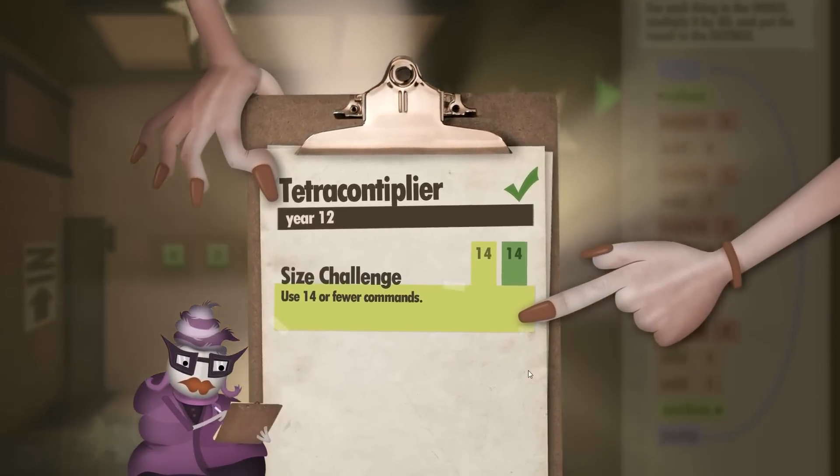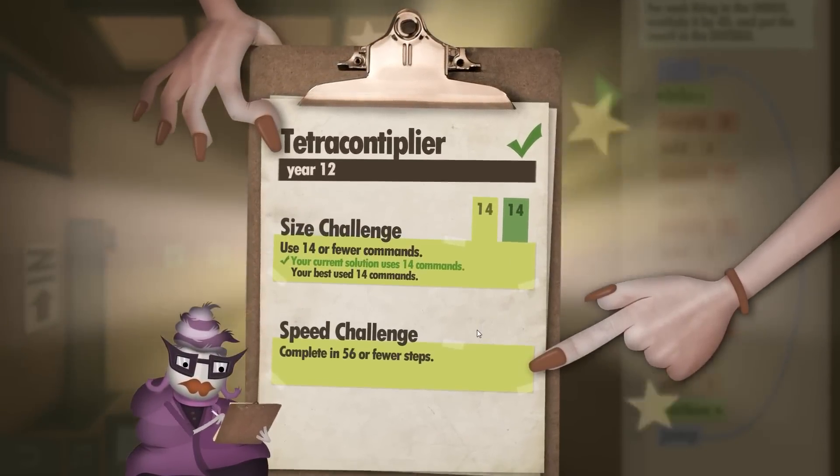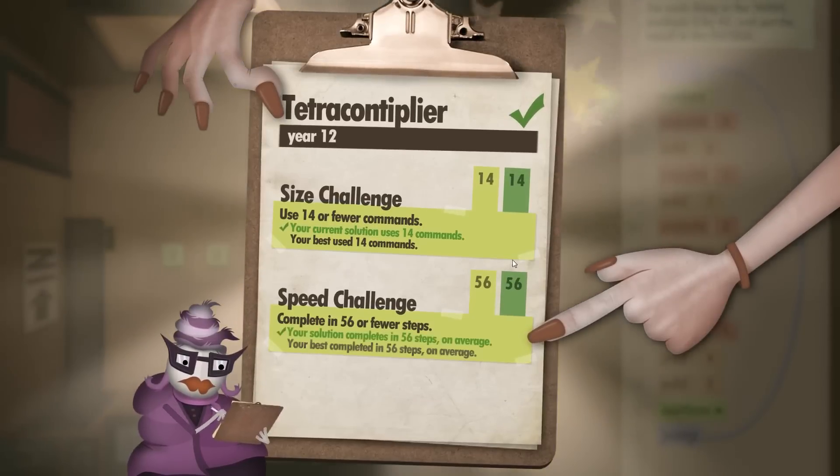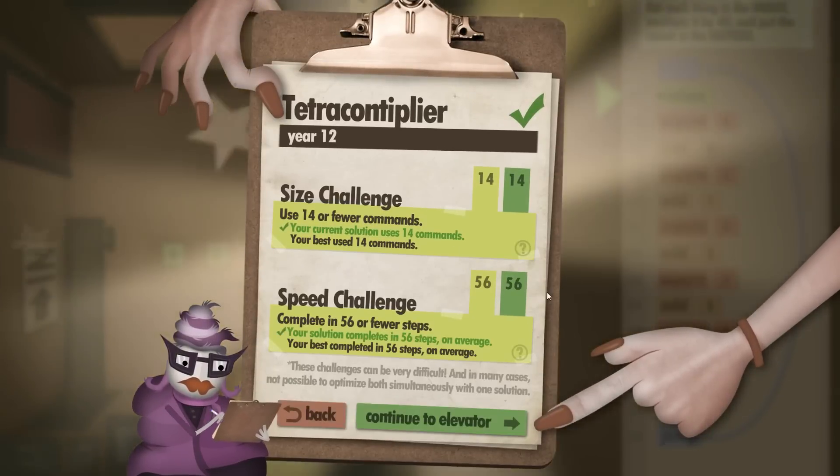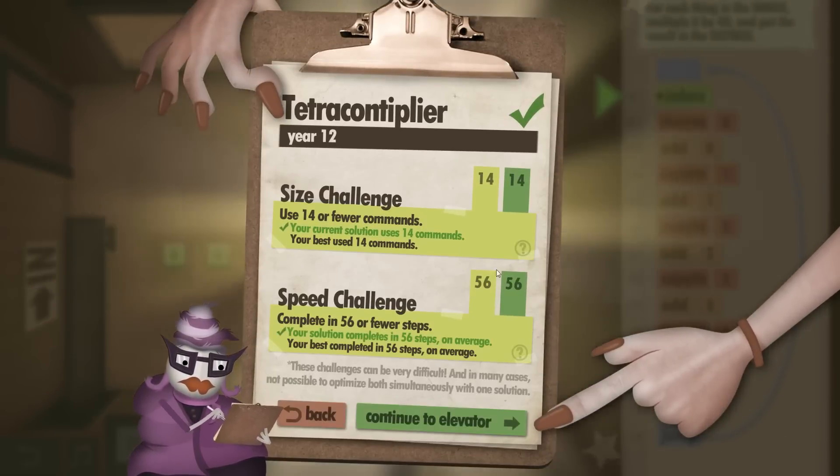So we got 14 commands exactly, and then we get the speed challenge with exactly 56. So that's the Tetra Contemplier. See you next time.